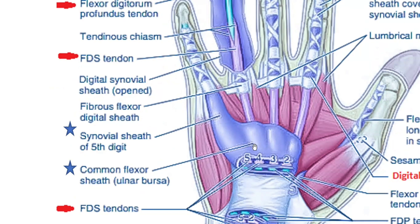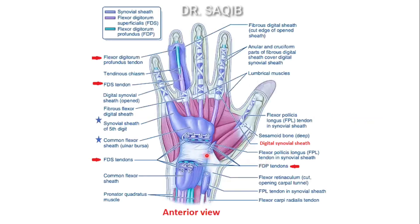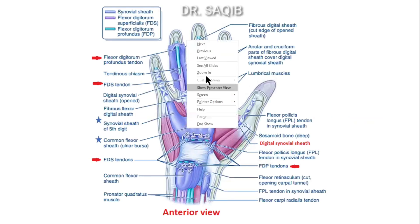Infection of the little finger will spread to the common flexor sheath — the ulnar bursa. Similarly, tenosynovitis in the thumb can spread via the continuous synovial sheath of the flexor pollicis longus — the radial bursa. How far any infection can spread from the fingers is dependent on variation in their connection with the common flexor sheath. You can also see the space of Parona.